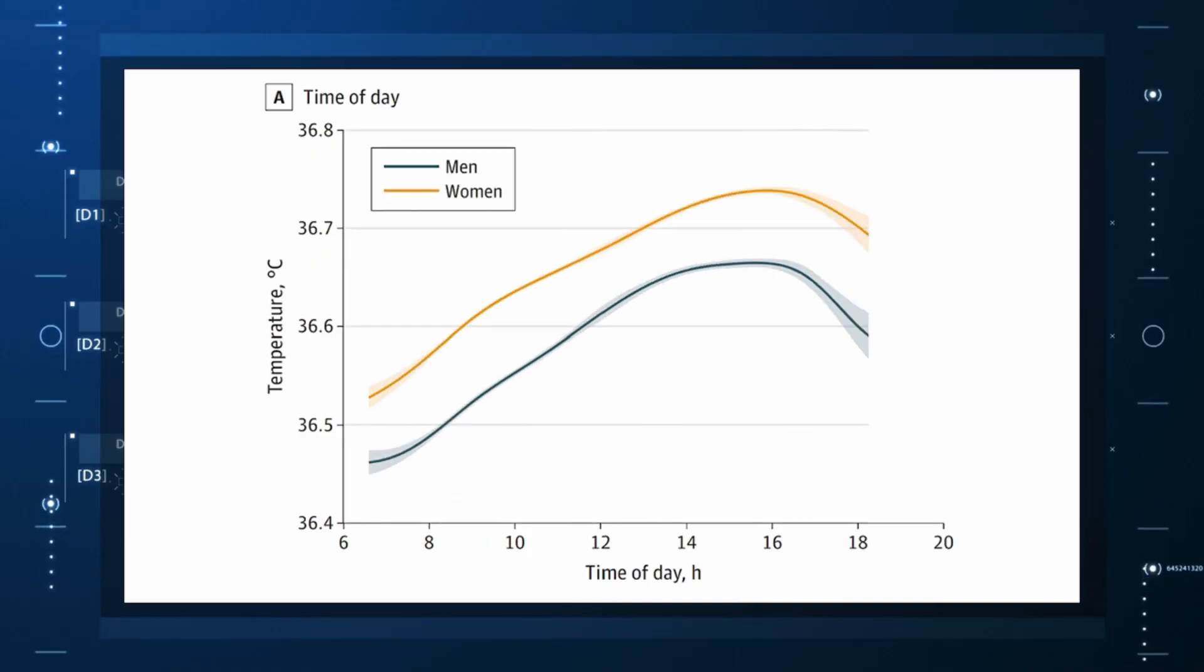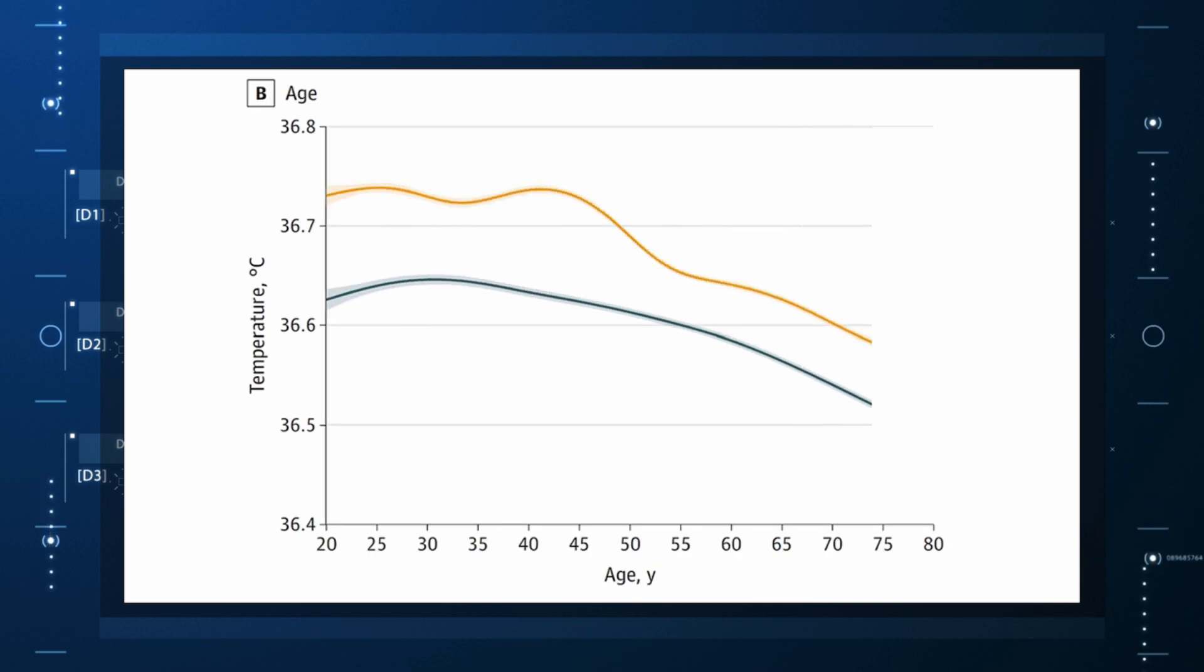Of course, normal temperature varied depending on the time of day it was measured – higher in the afternoon. The normal temperature in women tended to be higher than men. The normal temperature declined with age as well.